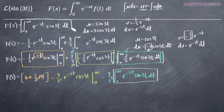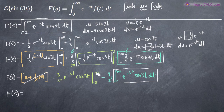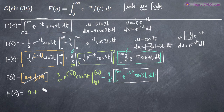Evaluating the middle term from 0 to infinity: plugging in infinity makes e to the negative infinity go to 0. Plugging in 0: e to the 0 is 1 and cosine of 0 is 1, so we get plus 3 over s squared. Now the last part becomes minus minus 9 over s squared times F of s, which is plus 9 over s squared times F of s. So F of s equals 3 over s squared plus 9 over s squared times F of s.